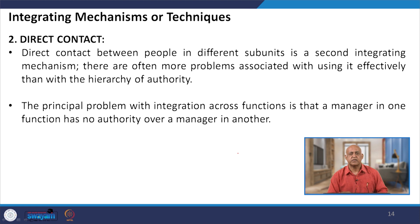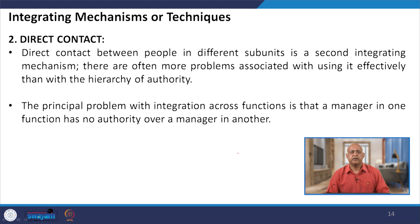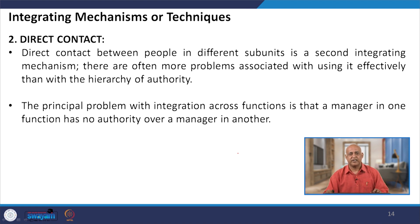The principal problem with integration across functions is that a manager in one function has no authority over a manager in another. Management must maintain direct contact with all people working, and the problems associated with using this horizontal mechanism must be effectively resolved. Because it is a horizontal structure, all are equal, and therefore there is no authority of one over another. In this situation, management must be very careful in integration, as there is direct contact and no superior-subordinate relationship.